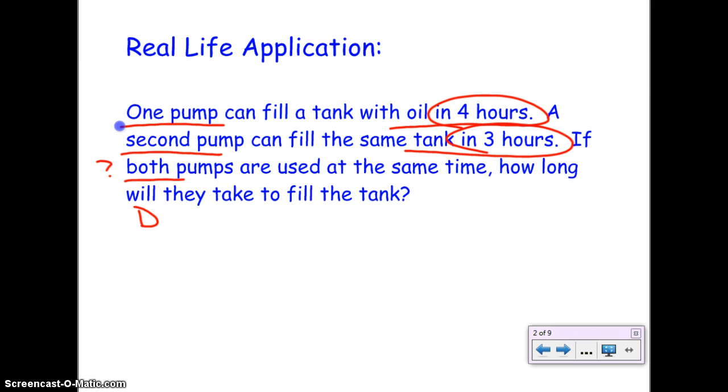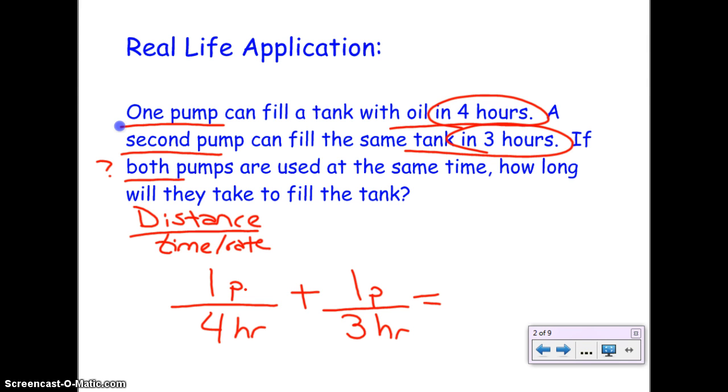The way that we set these up is distance over time or rate. If you think about this, distance is meaning what are we trying to fill, what are we trying to really accomplish. So in this problem, we're talking about one pump. So I can say one pump takes four hours, so distance over time, so this is the four hours, and this is the pump. If I add both pumps, so I add the second pump, again one pump, this one takes three hours. Then how long will it take for us to do that same pump? So still one pump, but now both of them are working. So how long will that take? There's my x.